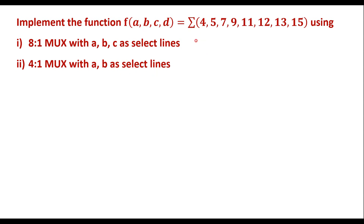This is the given function with four variables A, B, C, D. When implementing using a MUX, these variables are used as select lines. In the first case, we implement using an 8-to-1 multiplexer considering A, B, C as select lines, which means D must be used as the data line.